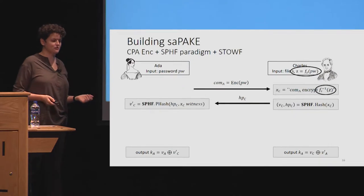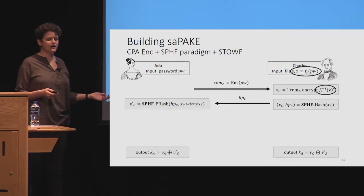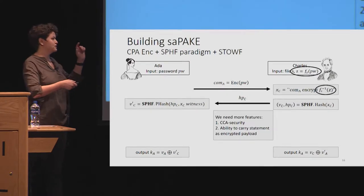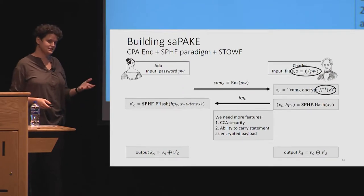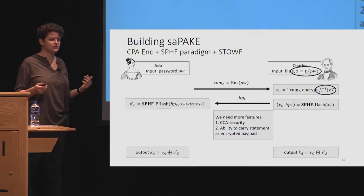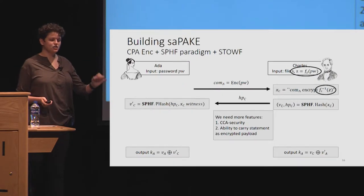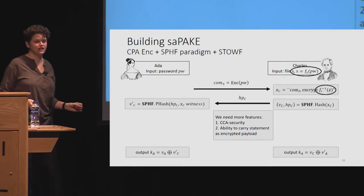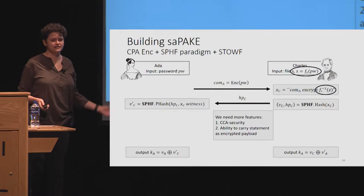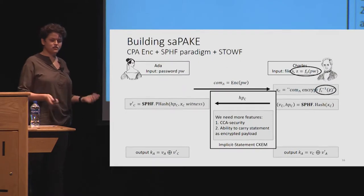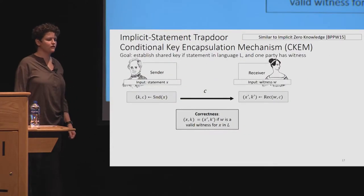To shave off half the protocol we do need to change some things. Ada now has no guarantee that Charles has the right password file, because she proved she has the password but he didn't prove anything. So we need to embed inside the hash projection some more information. We need CCA security, non-malleability, and the ability to carry an encrypted payload — Charles needs to be able to send his password file over to Ada so she can check that he has the right one, and it must be non-malleable so he can't pretend he had the password file when he didn't. This changed SPHF is what we call an implicit statement CCAM.